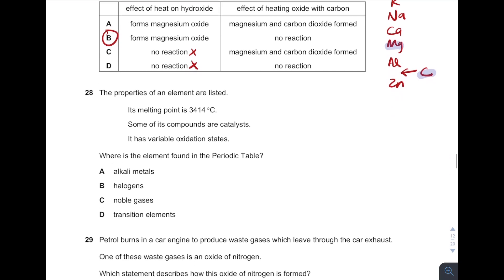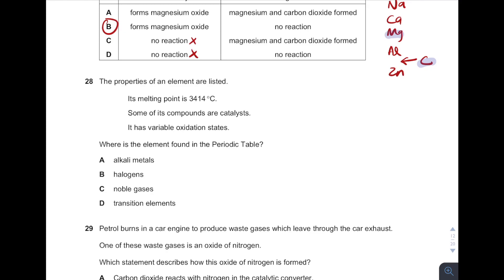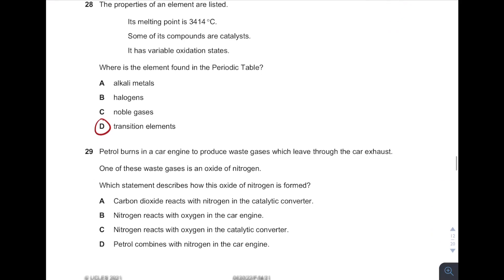Okay, then where is the element found in the periodic table? Melting point 3000-something, compound catalyst, variable oxidation states. From here, very obvious we know it is transition elements.